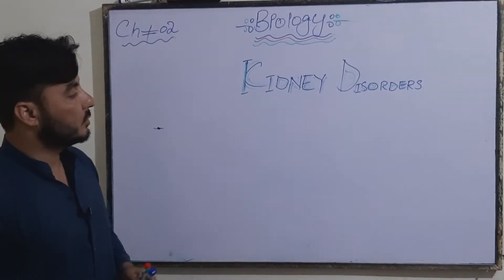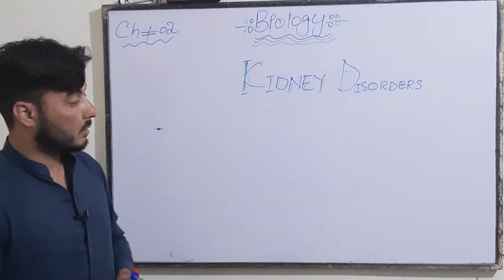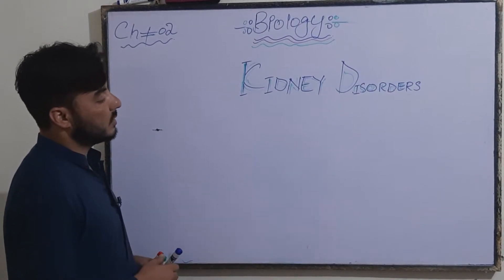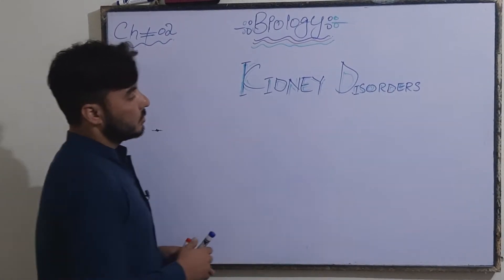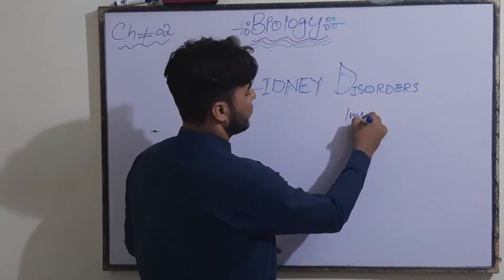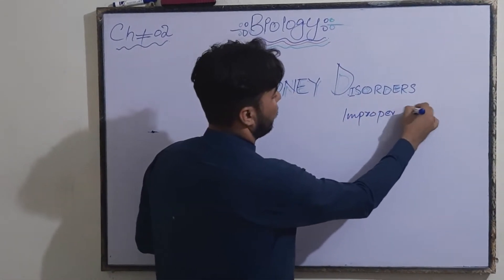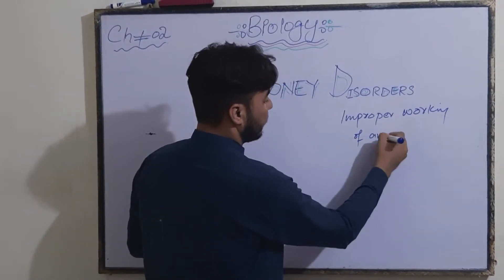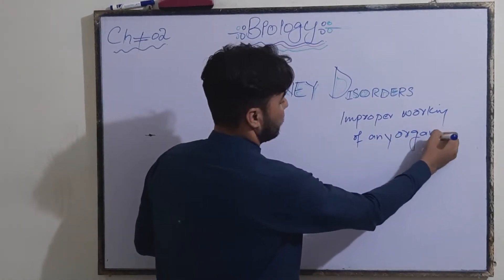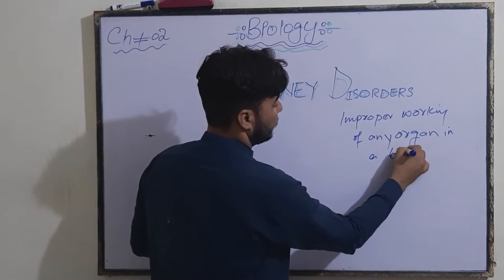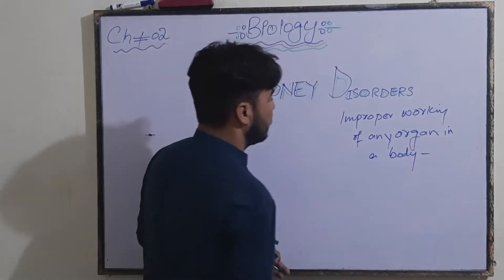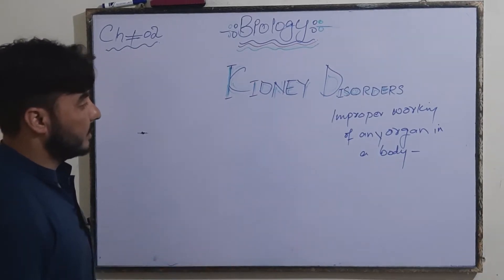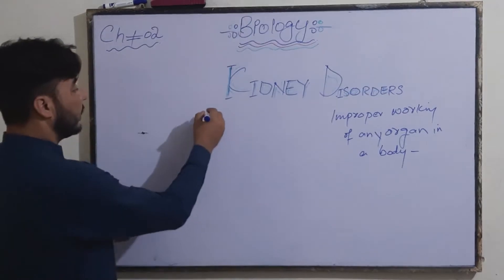Today we will discuss the topic of kidney disorder. First of all, what is a disorder? A disorder is called the improper working of organs — the improper working of any organ in the body. This is called a disorder. So if this disorder is related to the kidney, as we know that the kidney is an organ.